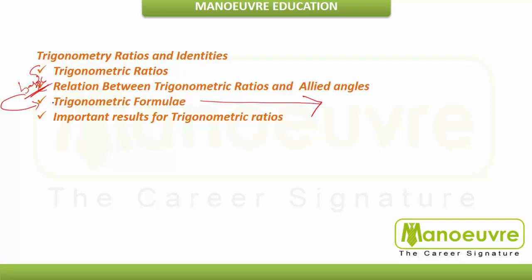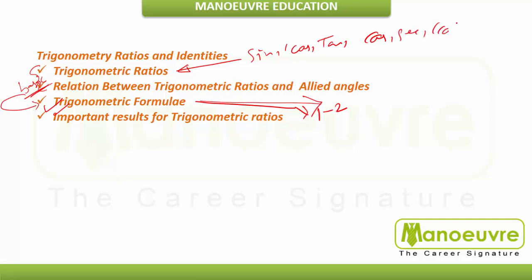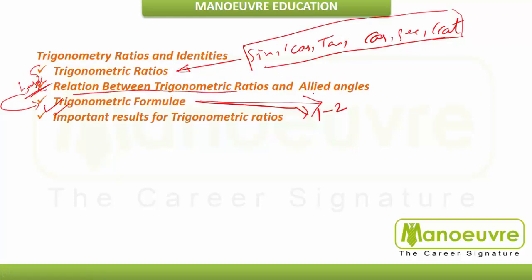You can expect one to two questions from Trigonometric formulas. The trigonometric ratios include sin, cos, tan, cosec, sec, and cot. You need to study their values, how to derive relations between them, and their allied angles — such as 90 minus theta, 180 minus theta, 360 minus theta — and in which quadrant each ratio is positive or negative. The mnemonic 'All Smart Trigo Classes' tells you: All ratios positive in Q1, Sin positive in Q2, Tan positive in Q3, Cos positive in Q4.